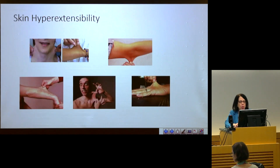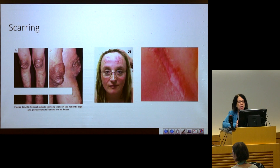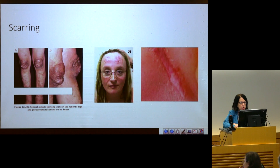Some photos illustrate the kind of skin hyperextensibility we see in the classical type — extreme skin hyperextensibility and also extreme skin fragility. People with classical EDS have a tendency for their skin to tear; even minimal trauma can cause tearing of the skin in this disorder.